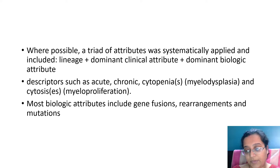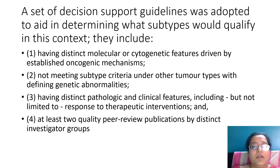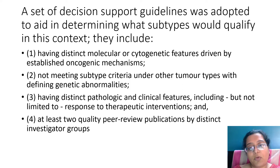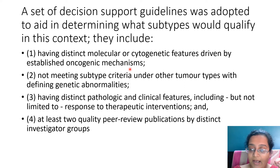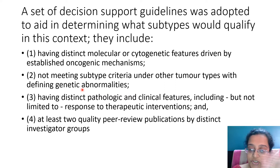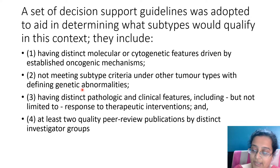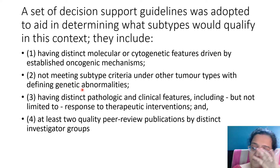For some entities molecular criteria were already there; for others it has only now become a formal criterion. Even in the last classification some entities had clinical criteria. Then a set of decision support guidelines was adopted to aid in determining what subtype qualifies. In those three headings, they included entities having distinct molecular or cytogenetic features driven by an established oncogenic mechanism — so only well-defined mutations with a well-defined pathogenetic mechanism were included. Entities not meeting subtype criteria under other tumor types were also considered; for example, something with dysplasia but whose mutation is actually specific for another tumor such as AML would be placed in AML, not MDS. The molecular profile, clinical profile, and lineage specificity must be very specific for that tumor.